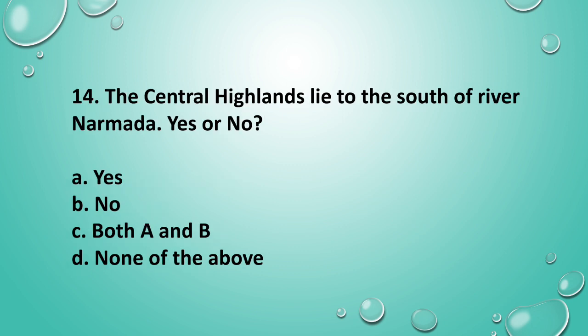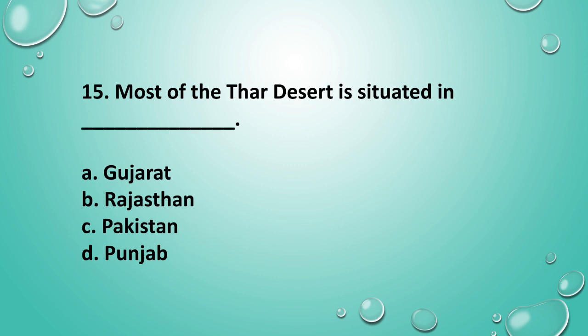Question 14: The central highlands lie to the south of River Narmada — yes or no? The answer is no. Question 15: Most of the Thar Desert is situated in which state? The answer is option B, Rajasthan.